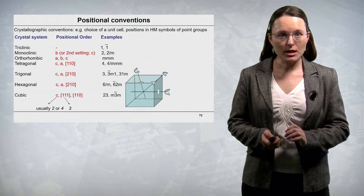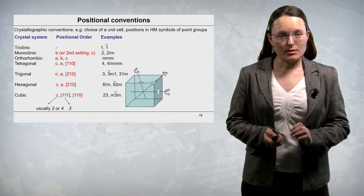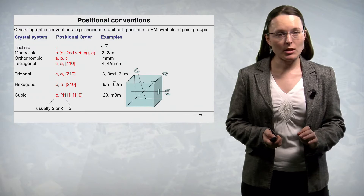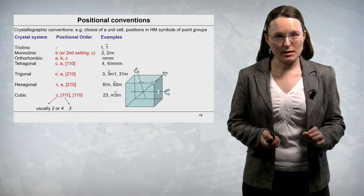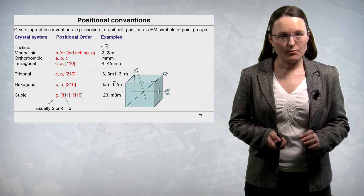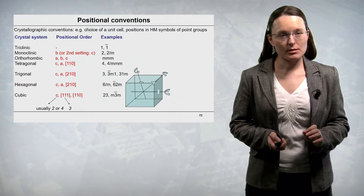In the monoclinic crystal system, the symbol in the Hermann-Mauguin notation denotes a special direction of the B cell constant, or in the second setting, the C cell constant. In the orthorhombic crystal system, the three symbols correspond to the A, B, and C directions respectively.